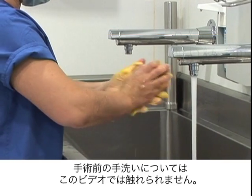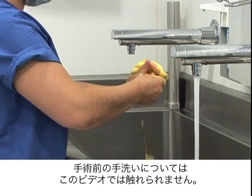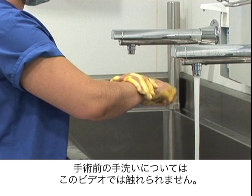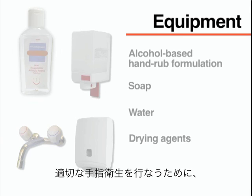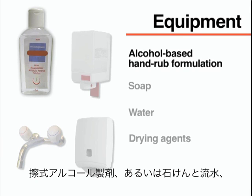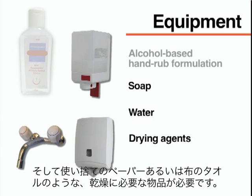Hand hygiene to prepare for surgical procedures will not be addressed in this video. To perform adequate hand hygiene, you will need an alcohol-based hand rub formulation or soap, water, and drying agents such as disposable paper or cloth towels.